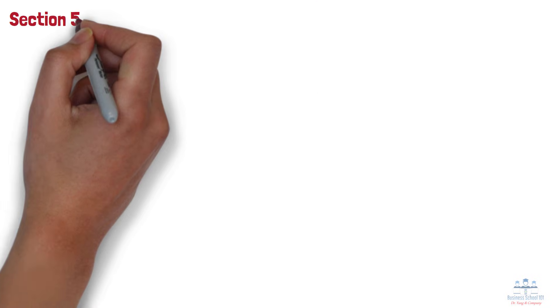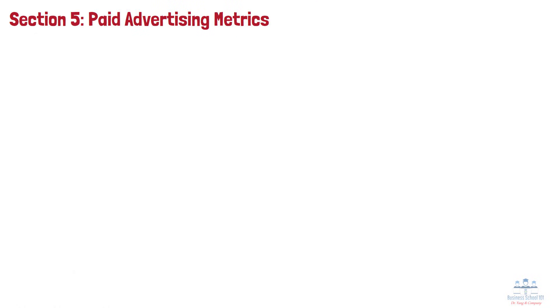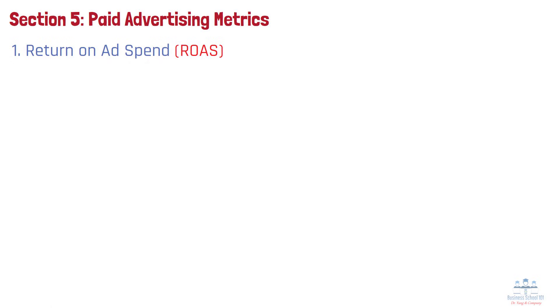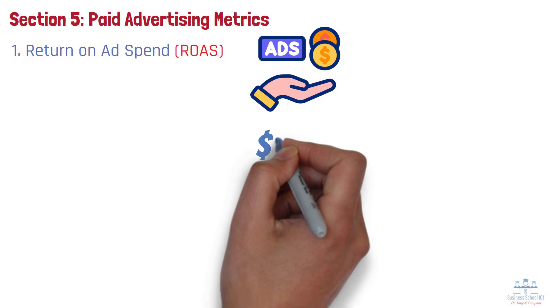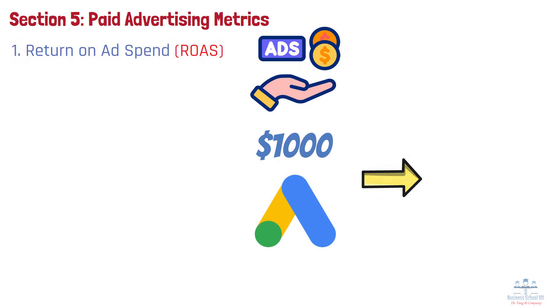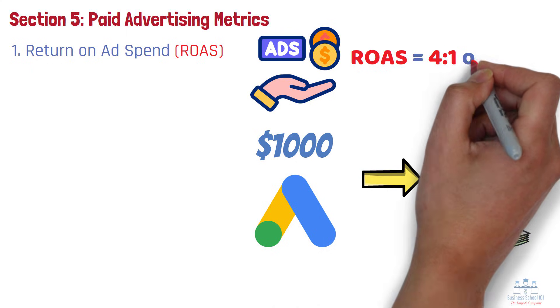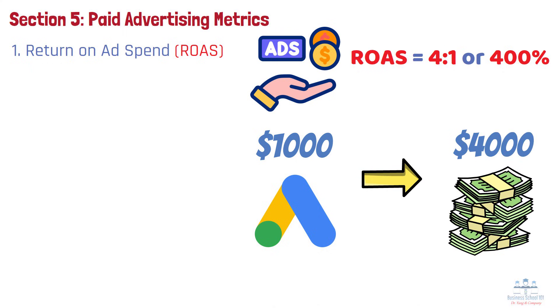Section 5. Paid Advertising Metrics. Number 1. Return on Ad Spend, ROAS. It measures how much revenue you earn for every dollar spent on advertising. If you spend $1,000 on Google Ads and earn $4,000 in return, your ROAS is 4 to 1 or 400%. It's one of the clearest indicators of advertising effectiveness and profitability.